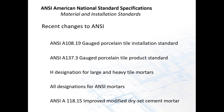Some recent changes to ANSI include A108.19, the gauge porcelain tile installation standard for interiors only with thinset mortar. ANSI A137.3 covers gauge porcelain tile as a product — the standard for manufacturing, the types of strengths it should have, where it can be used. The H designation was added to mortars for large and heavy tile mortars. All the designations for ANSI mortars were added in 2012. In addition, in 2012 a new standard for mortars came out: the improved modified dry set cement mortar, 118.15 — a premium mortar.